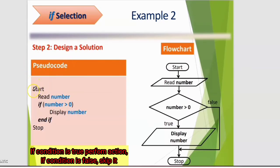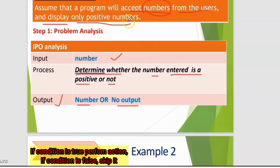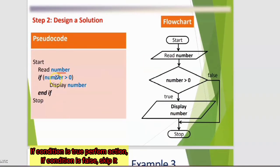For the pseudocode, you can start with 'Start' and 'Stop', or use 'Begin' and 'End'. Write: Start, Read number. The input is number. Then write the condition: if (number > 0) — because we display only positive numbers, a positive number means the condition must be number greater than zero. Display number. Then end if. Then Stop.